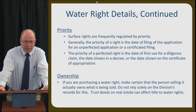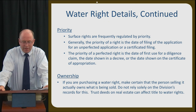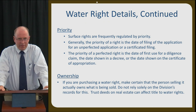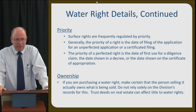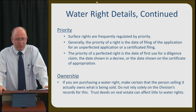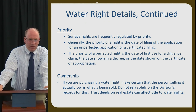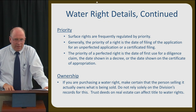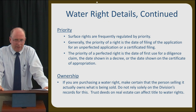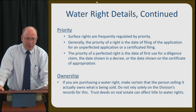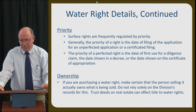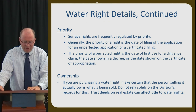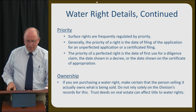Priority. Surface rights are frequently regulated by priority. We don't generally distribute groundwater rights by priority because of the aquifer and its storage capability. Generally, the priority of a right is the date of filing of the application for an unperfected application or of a certificated filing. The priority of a perfected right is the date of first use for a diligence claim, shown in a decree or on the certificate of appropriation. Perfected just means it's a finalized water right. Regarding ownership, you need to be careful and be certain that the person selling a water right actually owns what is being sold. You can't always rely on our records — if they're not updated, you need to check with the county recorder to see what water rights you may be dealing with.